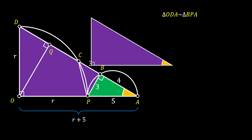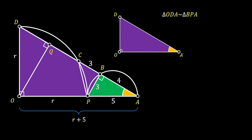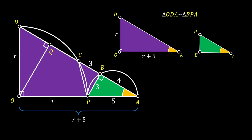Now we will isolate those triangles. We isolate the purple triangle with base R plus 5 and height R, and then we isolate and rotate the green triangle so it corresponds with the purple triangle. This green triangle has a base of 4 and a height of 3. We can use the rule of similarity, which states that the ratio between the sides of these two triangles must be equal.